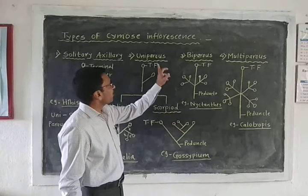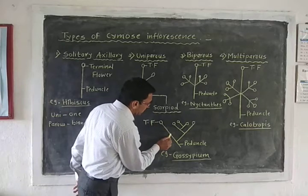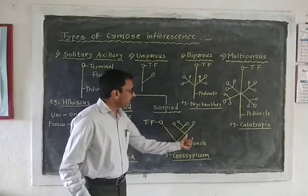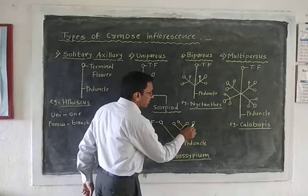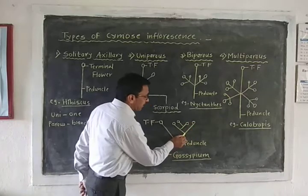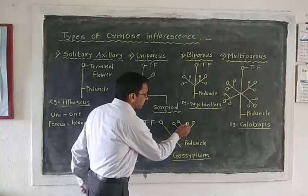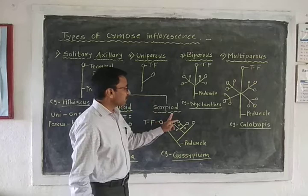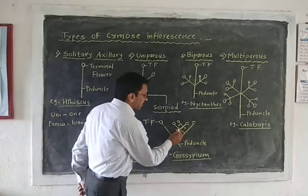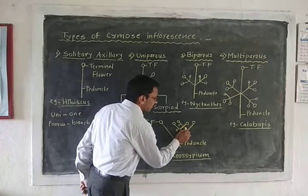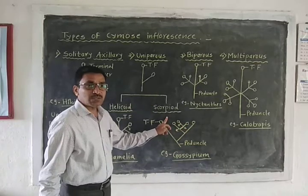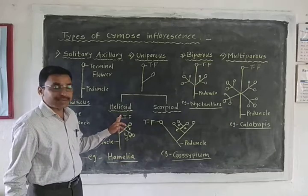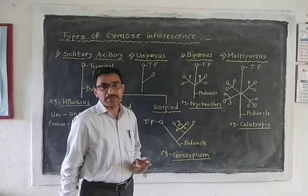The second subtype of uniparous inflorescence is scorpioid inflorescence. Here the peduncle bears a single terminal flower, just below it produces a lateral branch with a single flower, but the secondary branches are produced towards both sides. When secondary branches are produced towards only one side it is called helicoid; when towards both sides it is scorpioid. An example of scorpioid inflorescence is Gossypium, the botanical name of cotton.